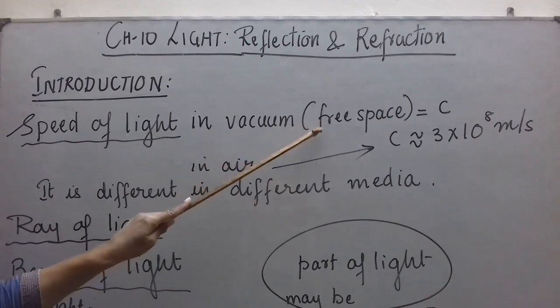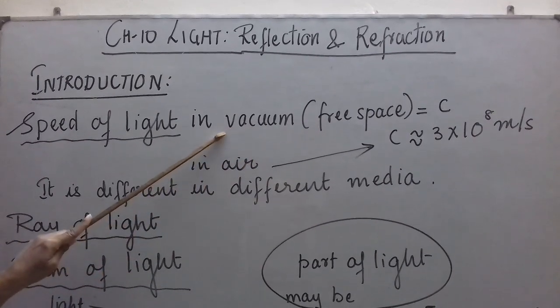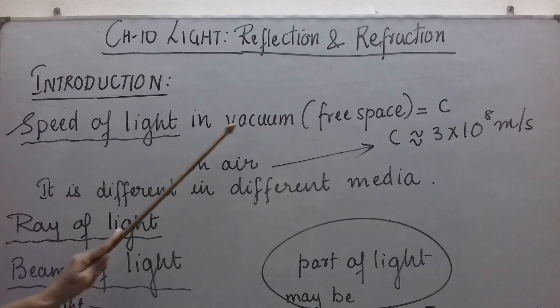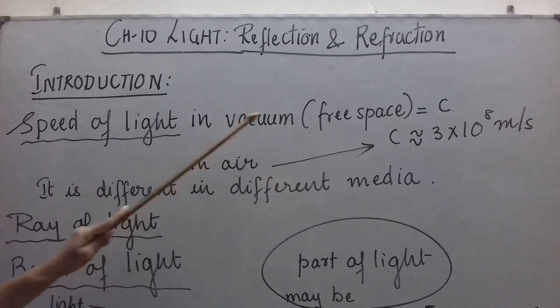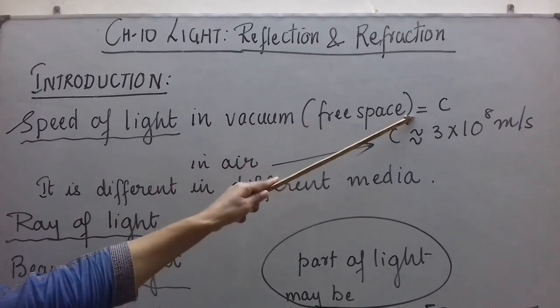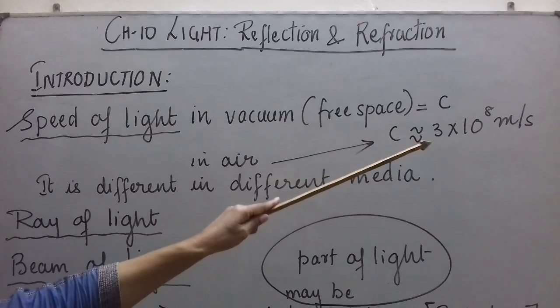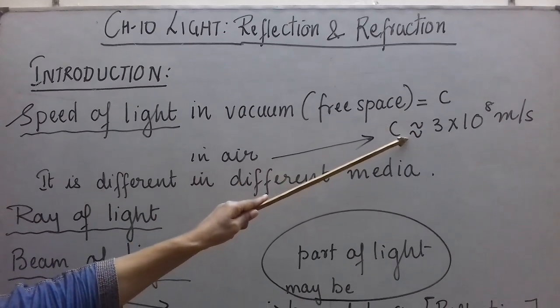Vacuum is also called free space, empty space. So, speed of light in vacuum is maximum. It is represented by small letter C and its value is 3 into 10 raised to 8 meter per second approximately.